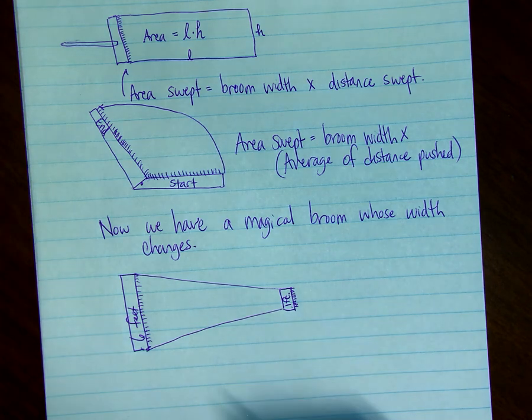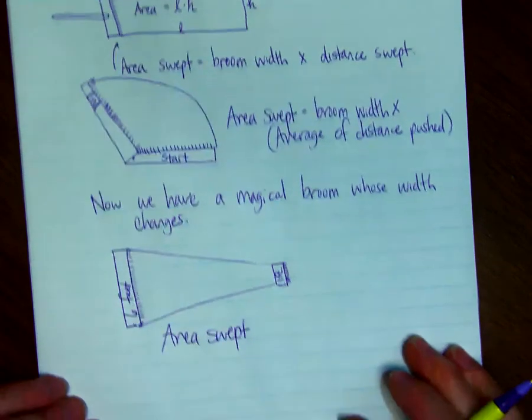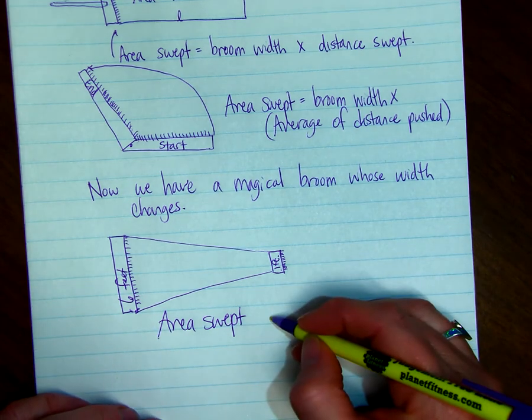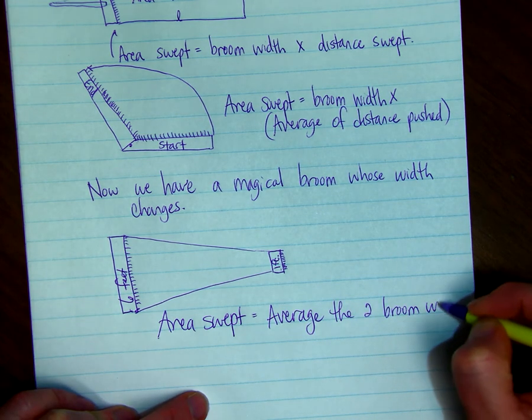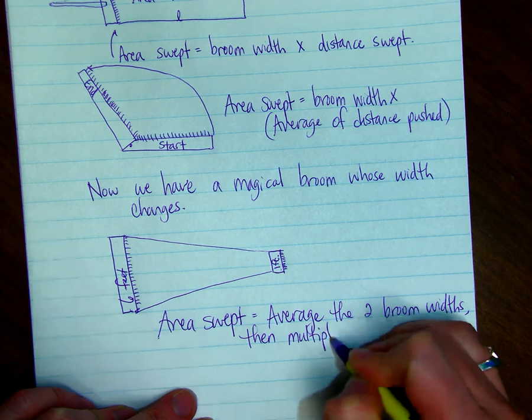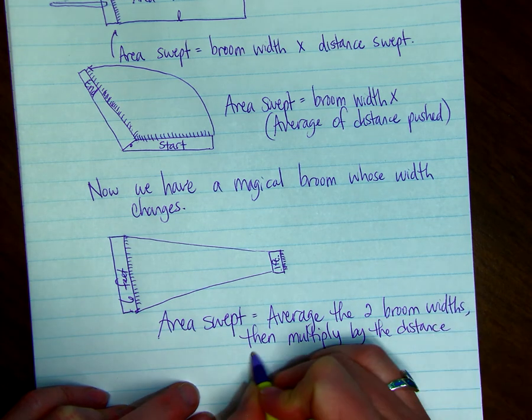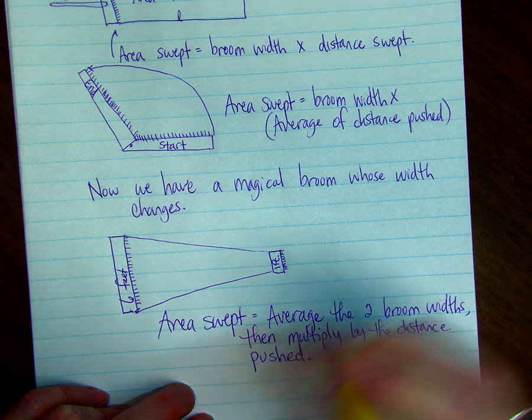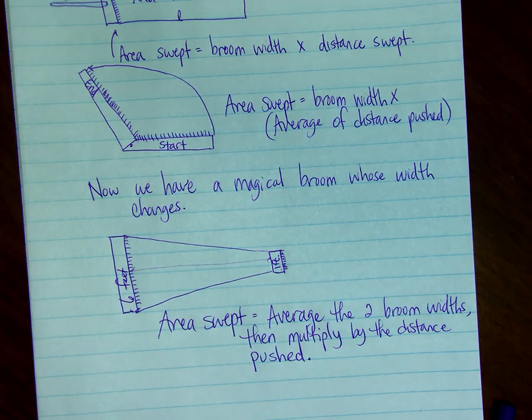To find the area swept, we're going to average the two broom widths. Then, we're going to multiply by the distance pushed. So, we pushed at this distance, and we would do six plus one divided by two. That's the average of the two broom widths.